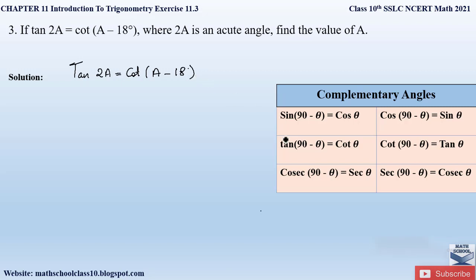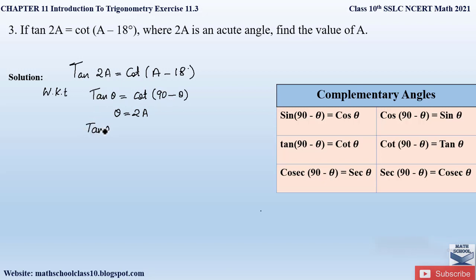From the table we know that tan θ = cot(90° − θ), or equivalently cot(90° − θ) = tan θ. We are going to apply the complementary angle identity. We know that tan θ = cot(90° − θ), where θ = 2A. So instead of tan 2A on the left hand side, we write cot(90° − 2A), giving us: cot(90° − 2A) = cot(A − 18°).